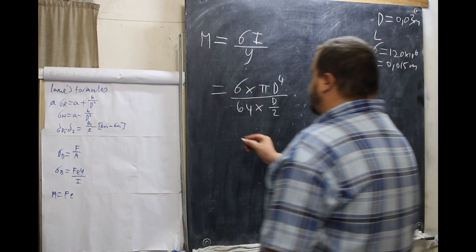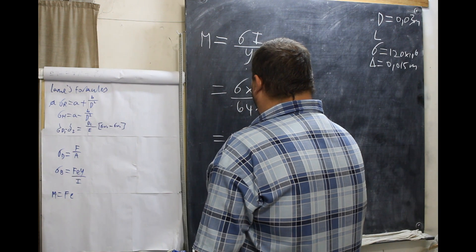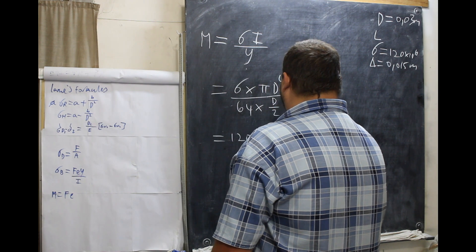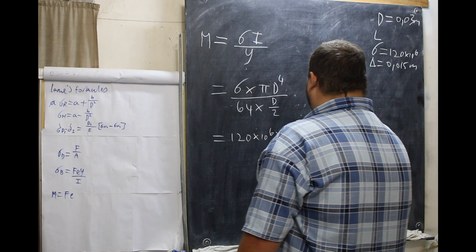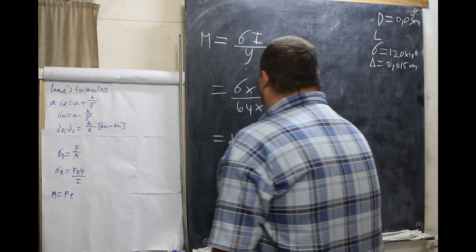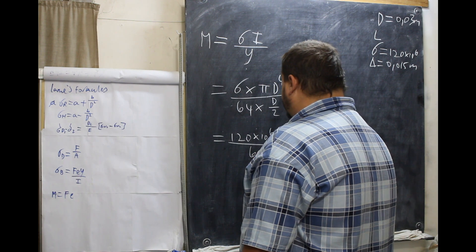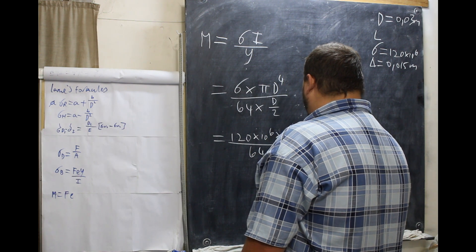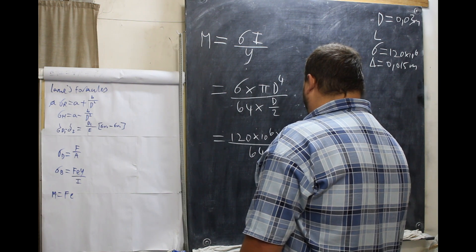So, what we need to consider is our formula. Now, our stress times pi D to the power of 4 over 64 times D over 2. So, let's put our values in. 120 times 10 to the 6 times pi times 0.03 to the power of 4 all over 64 times 0.015.